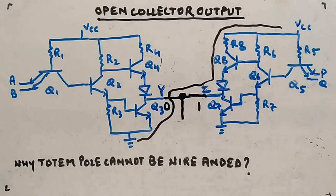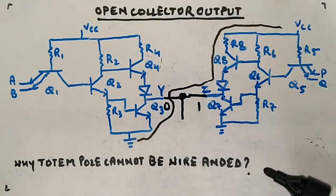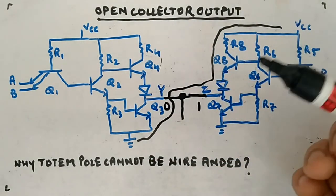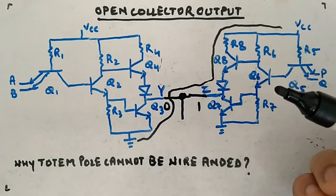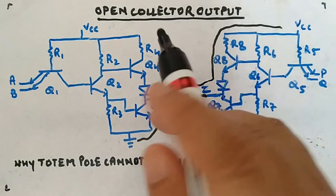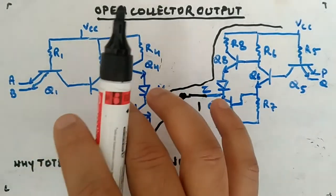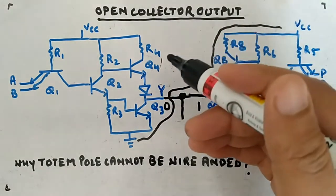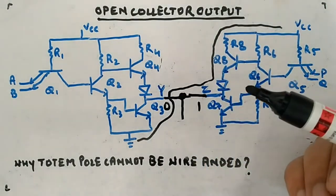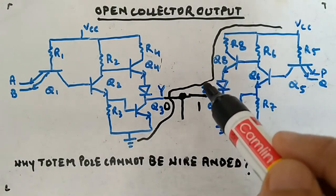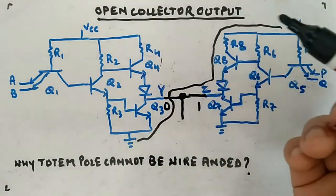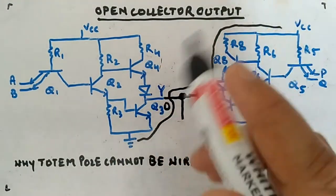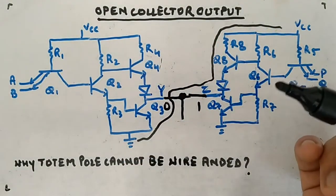To overcome this difficulty, we have the open collector output. I'm going to tell you the open collector version — it is also TTL but with a slight difference. The output collector is left open, and it is strictly for wire-ANDing purposes. The major application of open collector is to provide wire-ANDing, which you can't achieve with totem pole.